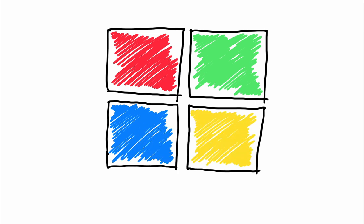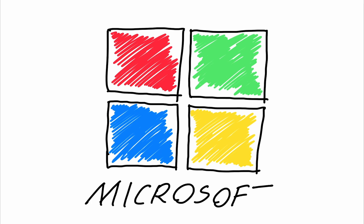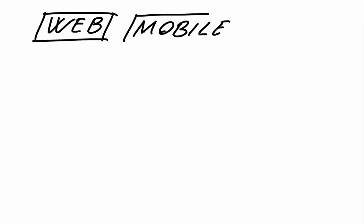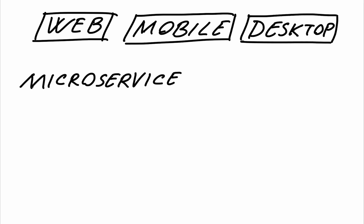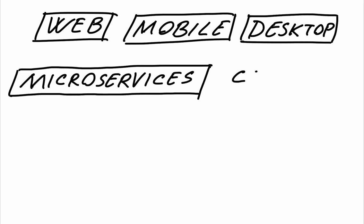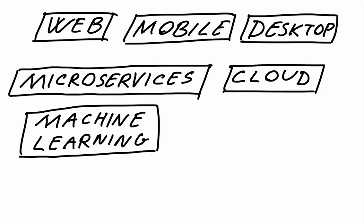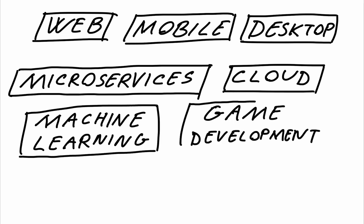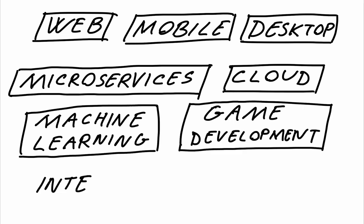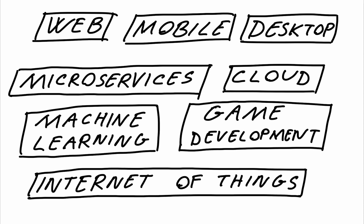.NET is a pretty complex blanket term that tends to cover a lot of components. With the help of these components, engineers can develop a multitude of apps. These apps include web apps, mobile apps, desktop applications, microservices, cloud services, machine learning algorithms, 2D and 3D games, and IoT apps.